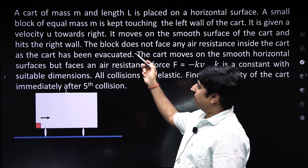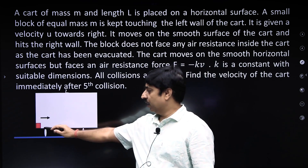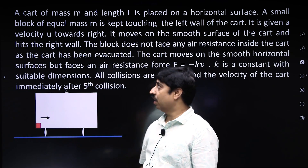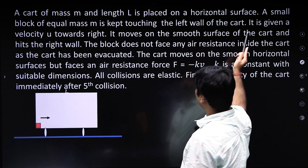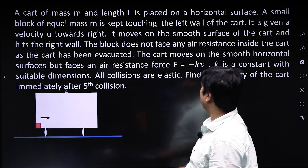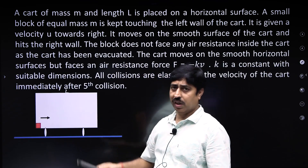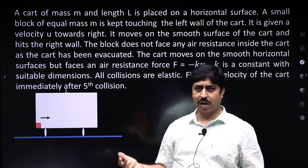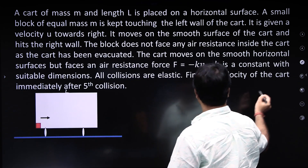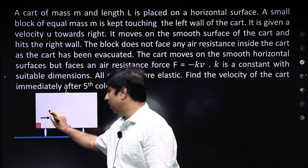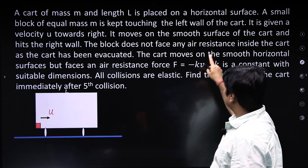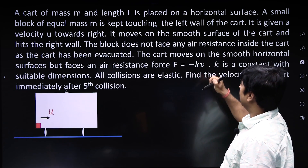A small block of equal mass m — this red colored object is a small block having the same mass as that of the cart — is kept touching the left wall of the cart. The block is initially touching the left wall of the cart and it is given a velocity u towards right. This small block is given a velocity u towards right; the initial velocity of the block is u towards right.